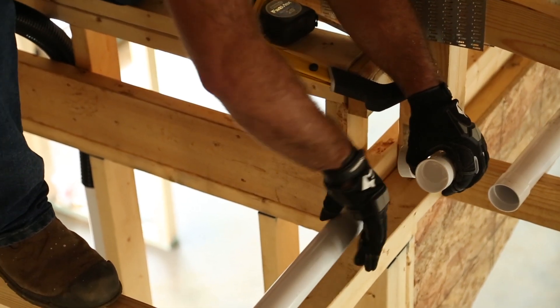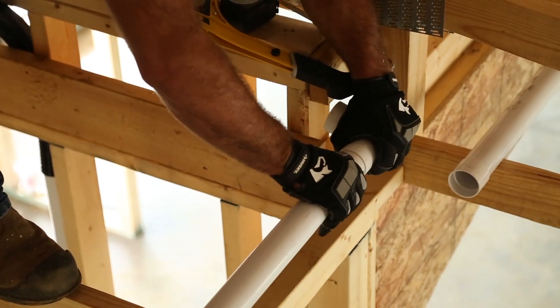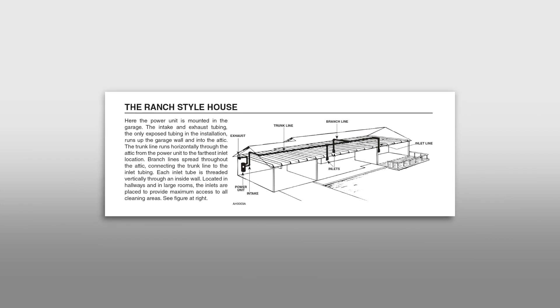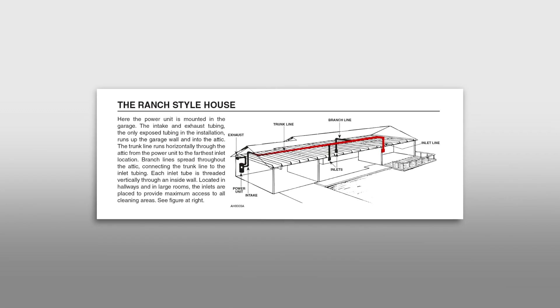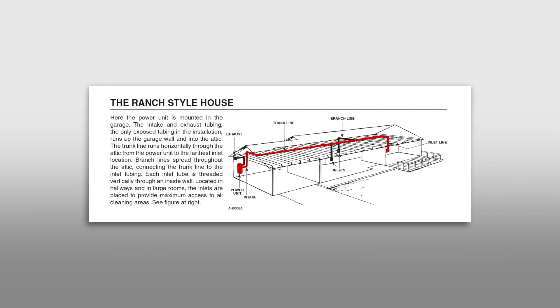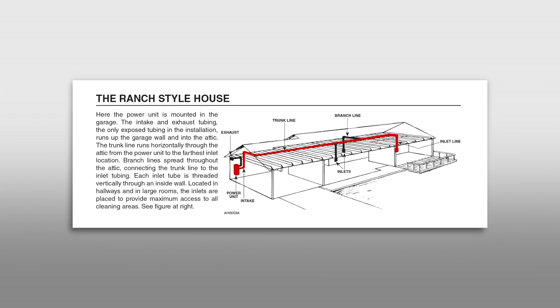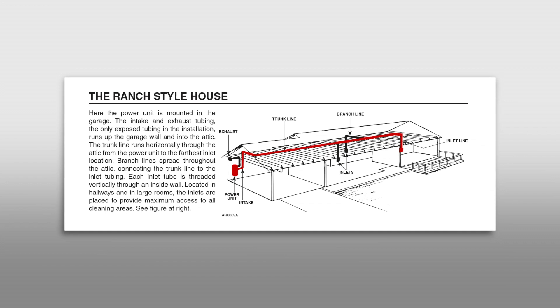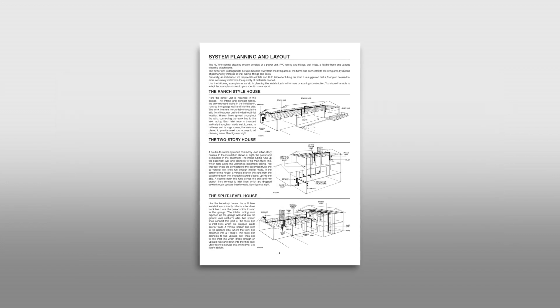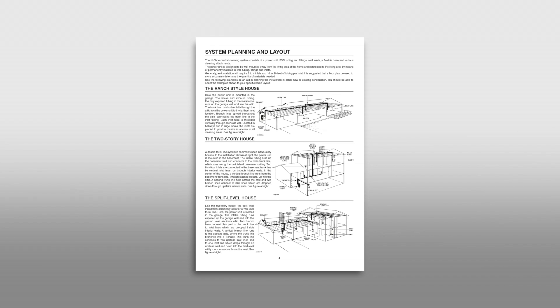Finally, plan the path of your piping network. The main trunk line connects the furthest inlet valve to the power unit. In the ranch home installation shown in this video, the trunk line runs horizontally along the length of the house through the attic. Alternatively, the trunk line can also be run through the basement.